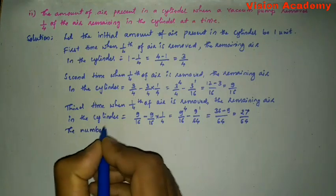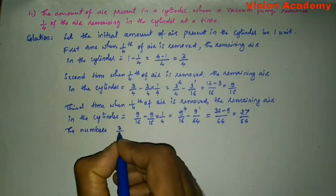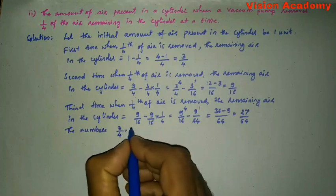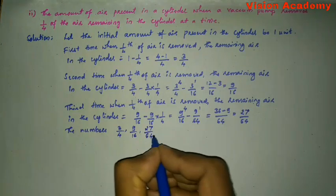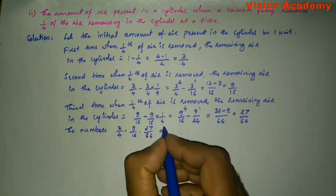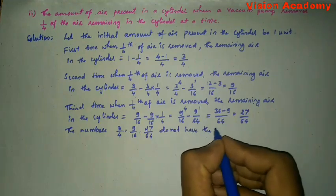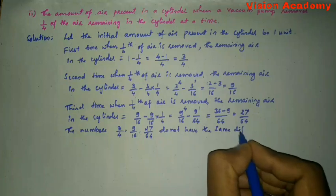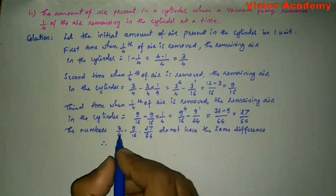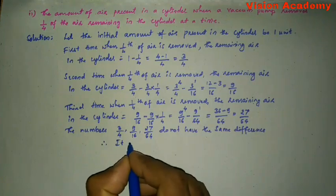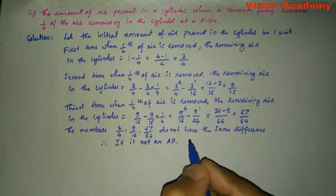The numbers 3/4, 9/16, 27/64 do not have the same difference. Therefore it is not an arithmetic progression.